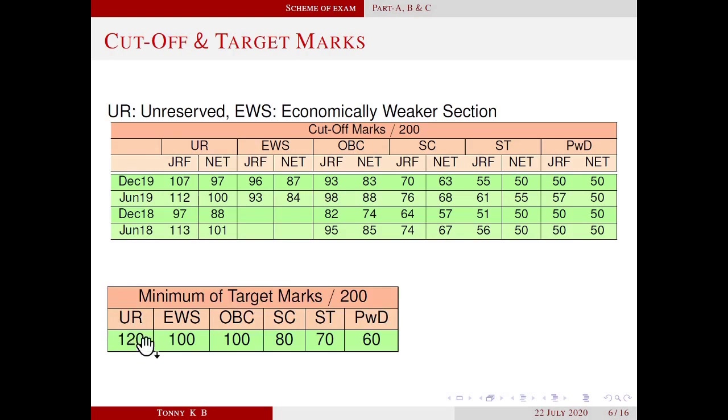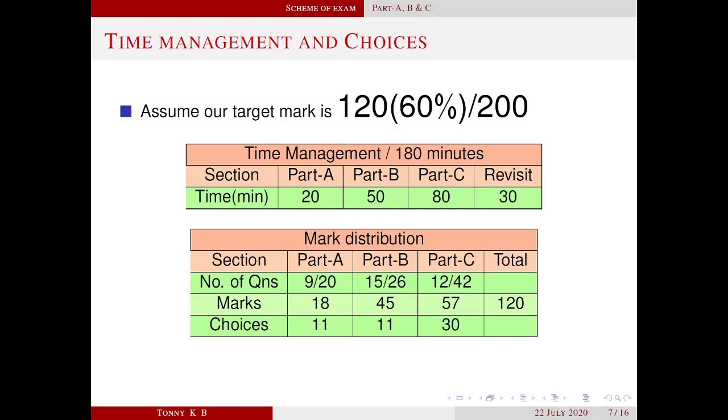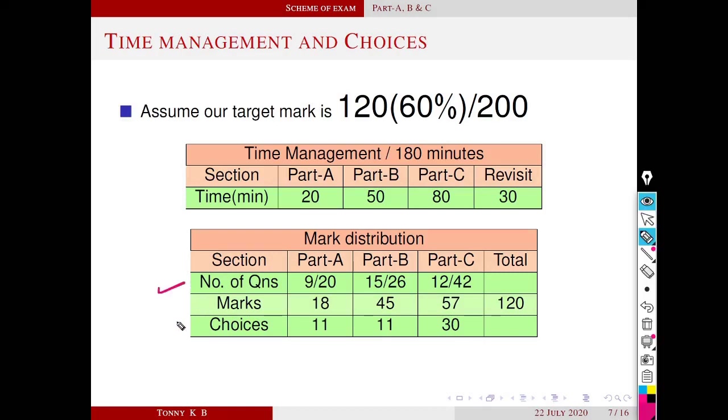Now I am concentrated on how to get this 120 marks. Time management is very important for objective type exams. You can consider this as the optimized time split-up for each section. To achieve our goal of 120, you may answer 9 questions from part A and 15 questions from part B and 12 questions from part C. The corresponding mark distribution is 18, 45, 57 and the total of 120. So you will get 11 choices from part A, 11 choices from part B and 30 from part C. Now I am focusing on row 1 and row 3. You can see that there are so many choices in each of the sections. You should utilize this advantage of choices.